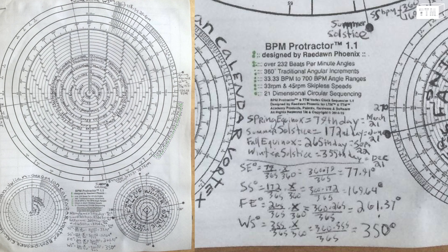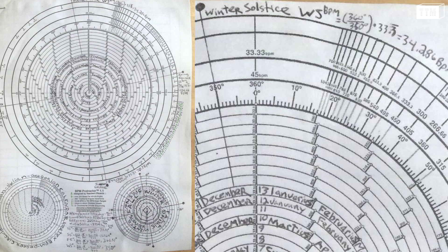Answer 4: To solve for the winter solstice that falls on the 355th day, we apply the same equations. Winter solstice degrees equals 360 degrees times 355 days divided by 365 days, equals 350 degrees. Winter solstice BPM equals 360 degrees divided by 355 degrees, times 33.33, equals 34.286 BPM.